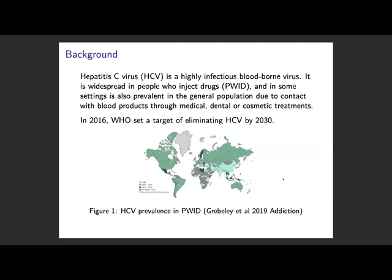Hepatitis C is a highly infectious blood-borne virus, primarily widespread in higher income countries in people who inject drugs due to needle and syringe sharing. In some settings it's also prevalent in the general population due to unsafe medical procedures or non-sterile equipment used in dental or cosmetic treatments. In 2016 the WHO set a target of eliminating hepatitis C by 2030, because around 2014 new curative drugs became available. Prior treatments were only 50-60% effective, whereas these new drugs are more than 95% effective, with fewer side effects.